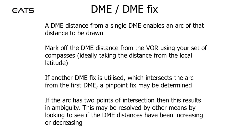DME-DME fix. A DME distance from a single DME enables an arc of that distance to be drawn. Mark off the DME distance from the VOR using your set of compasses, ideally taking a distance from the local latitude. If another DME fix is utilised which intersects the arc from the first DME, the pinpoint fix may be determined. If the arc has two points of intersection, then this results in ambiguity. This may be resolved by other means, such as looking to see if the DME distance has been increasing or decreasing.